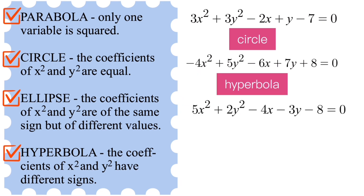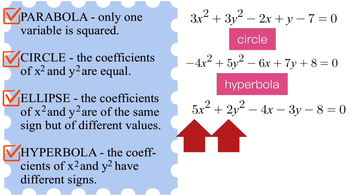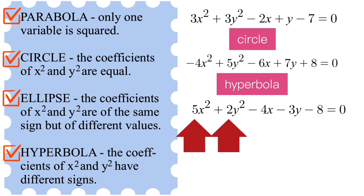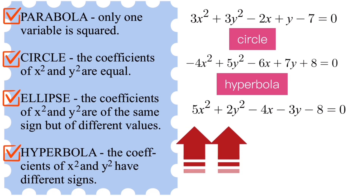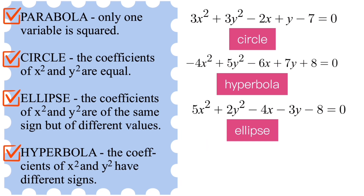In this example the coefficients of x² and y² are of the same sign — both are positive — but the values are different. The x² has 5 while the y² has 2. This tells us that this is an example of an ellipse.